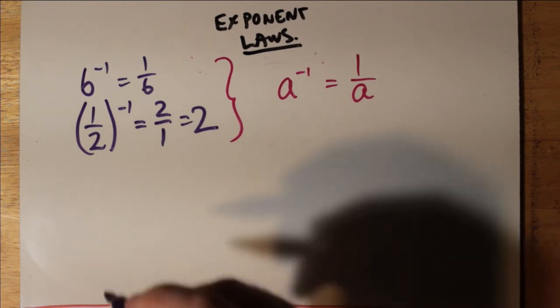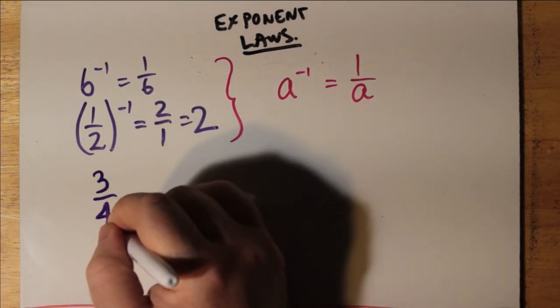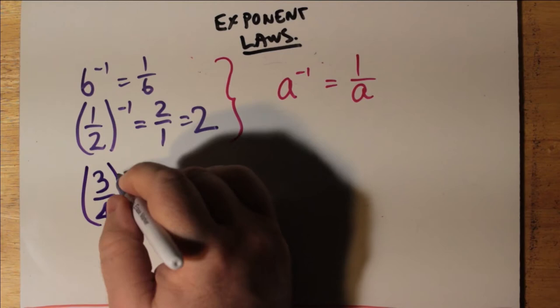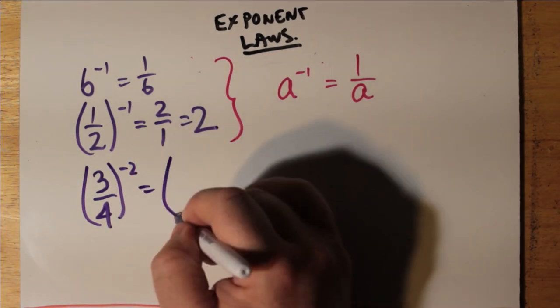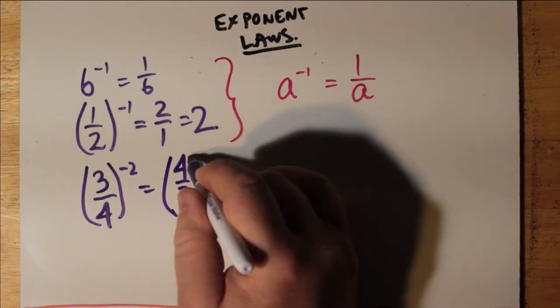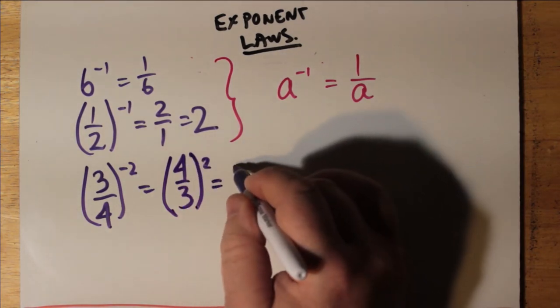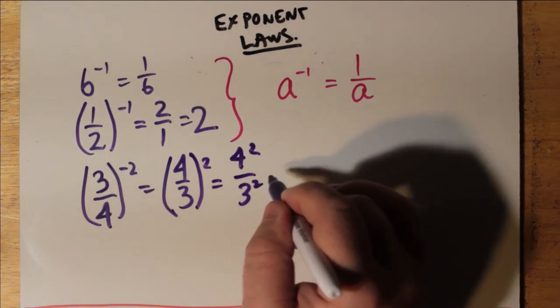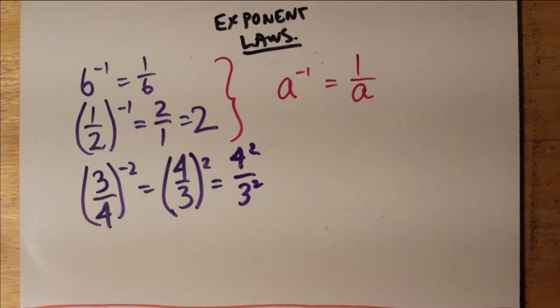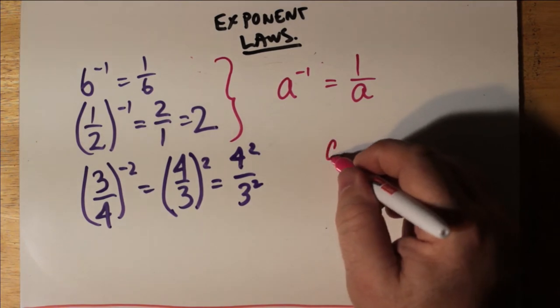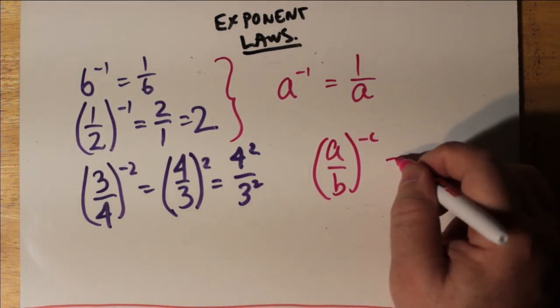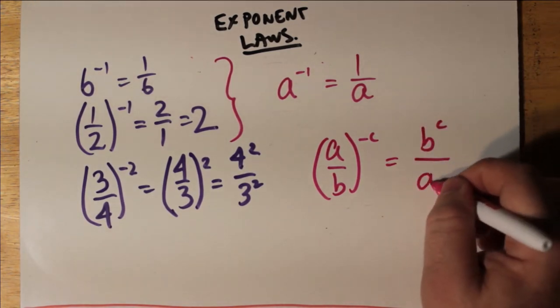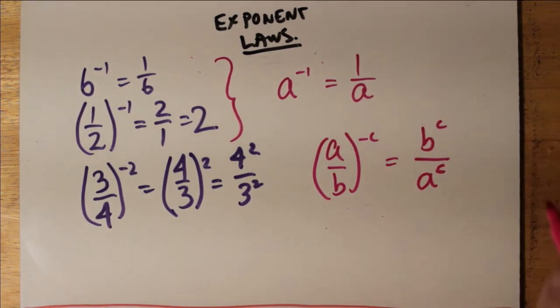So we can do this with any fraction at all. So 3 quarters raised to the power of minus 2 is like saying 4 thirds to the power of positive 2. We just flip it over and take away the minus sign. And that's like 4 squared over 3 squared, which is the same thing as 16 over 9. And so a over b all to the power of negative c is just b over a to the power of c, we just flip over a over b and we raise both to the power of positive c in that case.